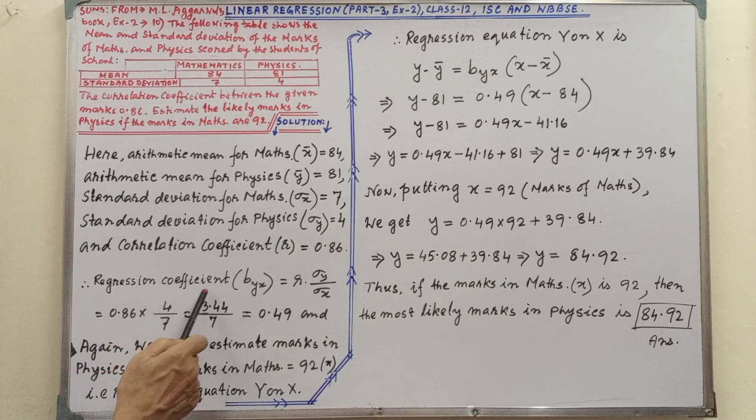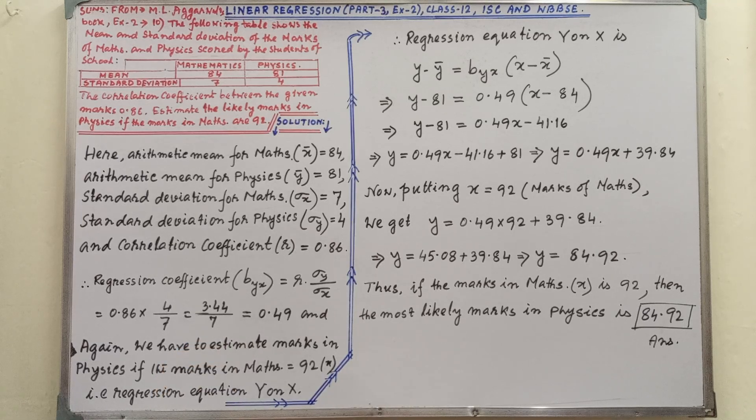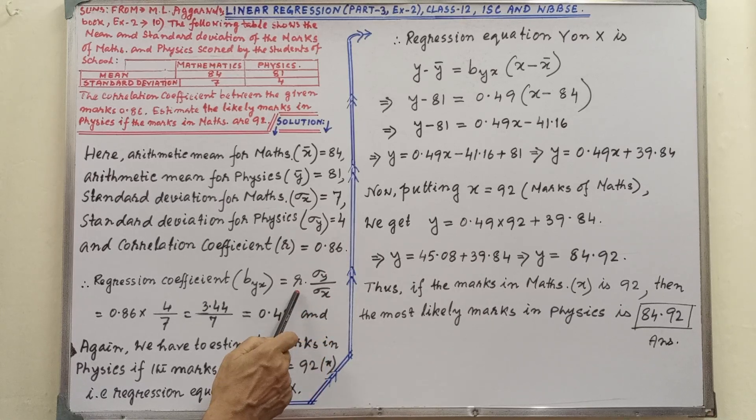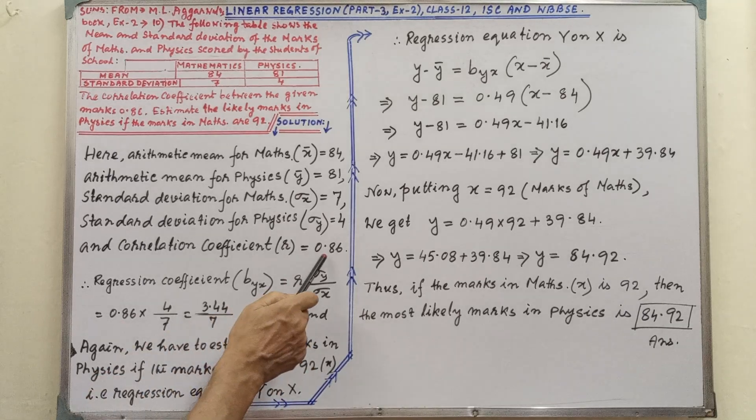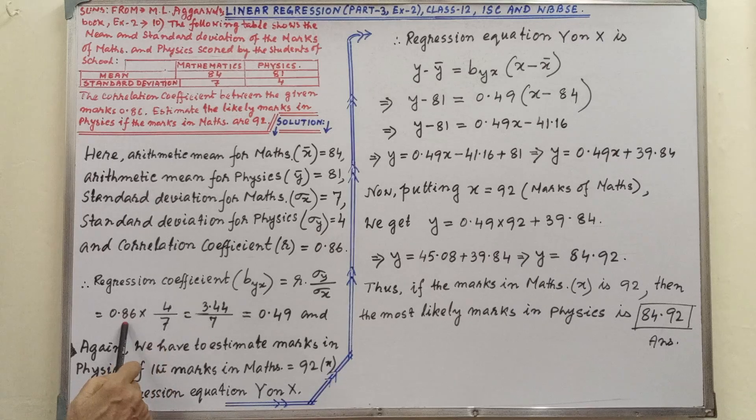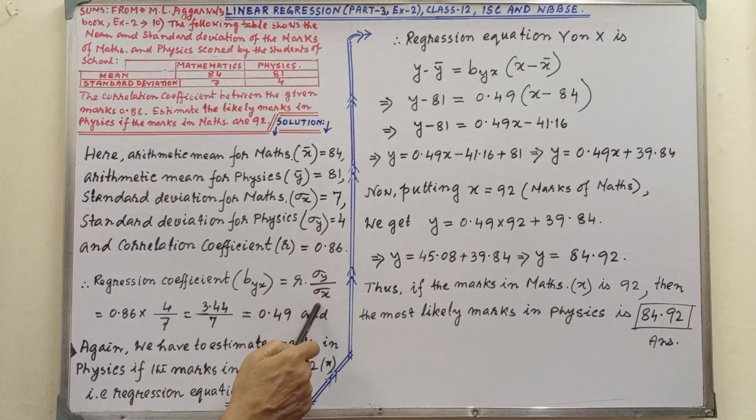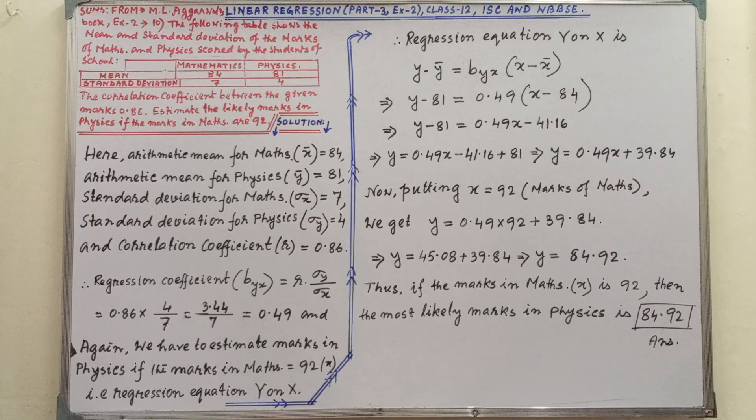Regression coefficient - regarding this we have to find out regression coefficient. This formula you will get in part 1 video: r times delta y by delta x. After writing the formula, the relevant values we have written here, that is 0.86, delta y is 4, and delta x is 7. After writing, by simplification we are getting 0.49.